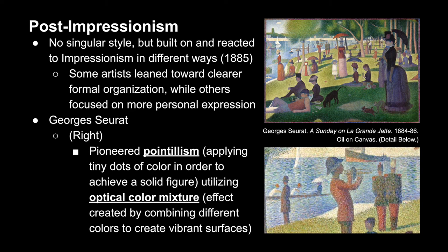As a process, pointillism relies on optical color mixing, which means that our eyes are going to mix colors that are close together, combining them to create different vibrant surfaces. We can see evidence of this in the two examples here — the top being from farther away, and the bottom being much closer to the painting. In the top, we see lots of dimensional, vibrant colors, but in the bottom we can identify each individual dot of color that the artist applied to create this effect.